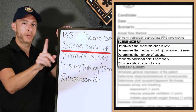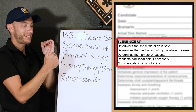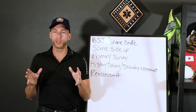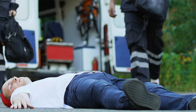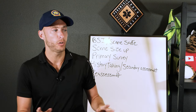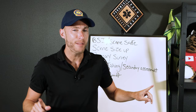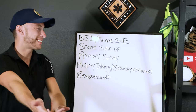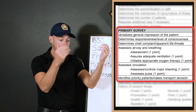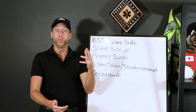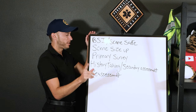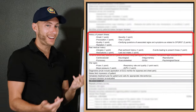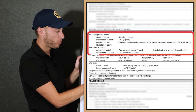After BSI we go to the scene size-up. Picture this as the ambulance approaching the scene — what am I seeing as I'm getting closer, before I reach the patient? Then the primary survey: we're at the patient now, looking for life threats, what demands immediate action. Then history taking — those mnemonics — getting a patient history.